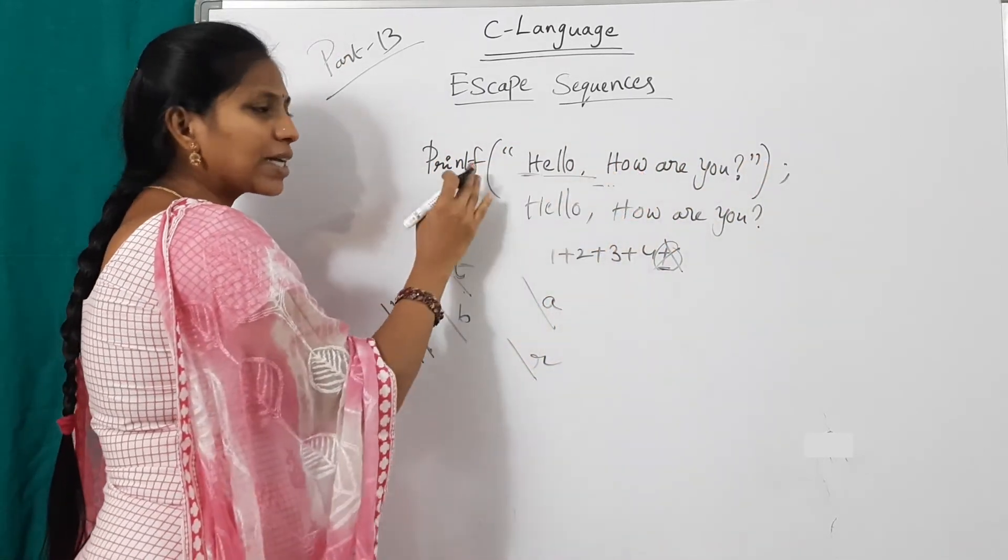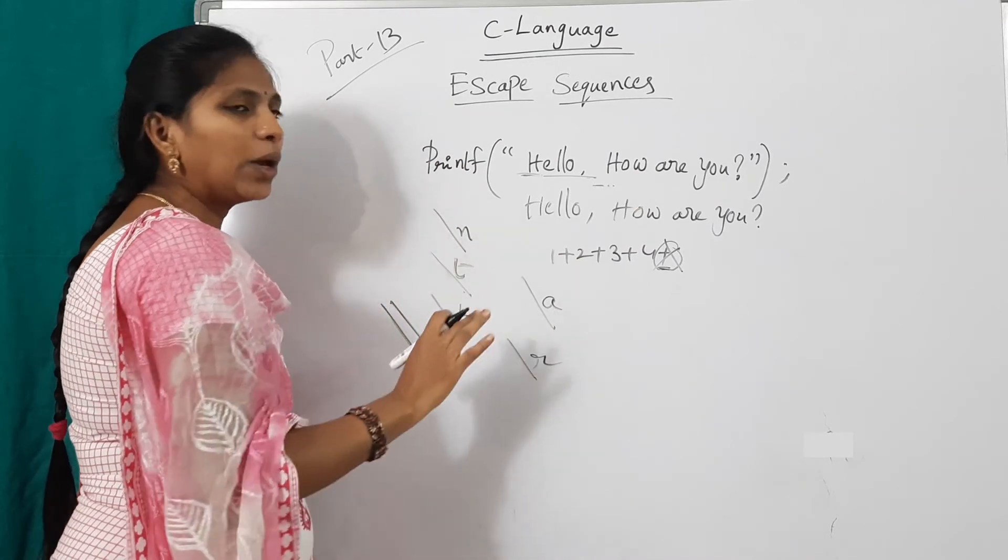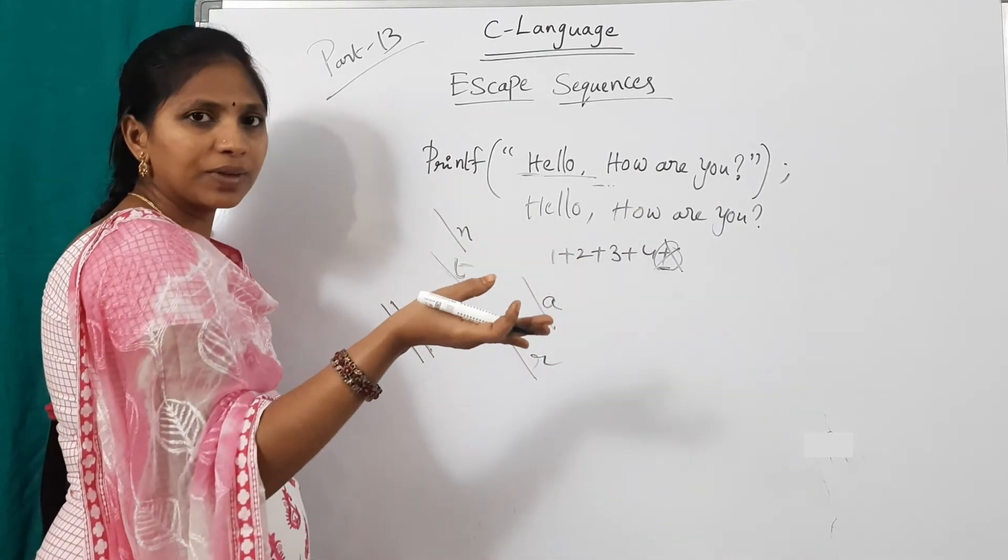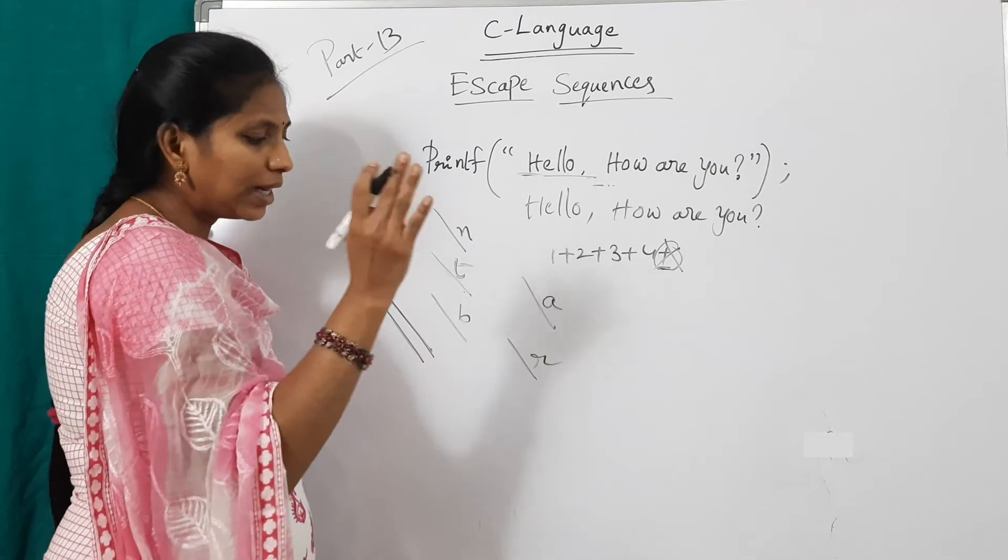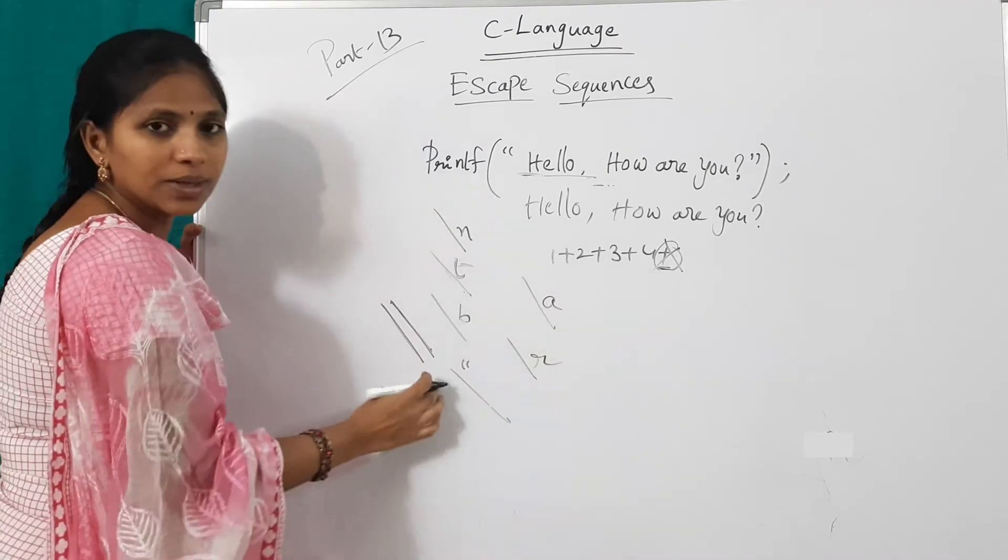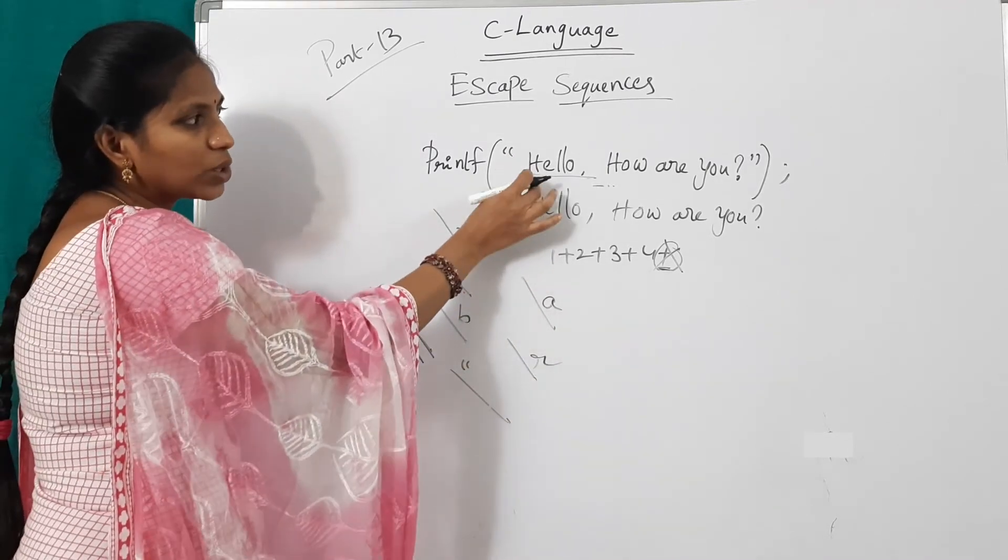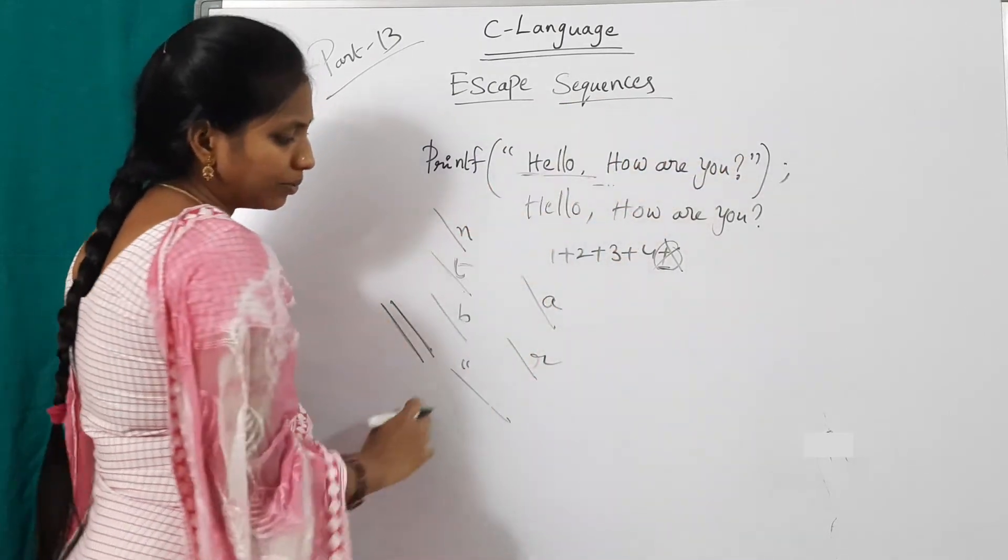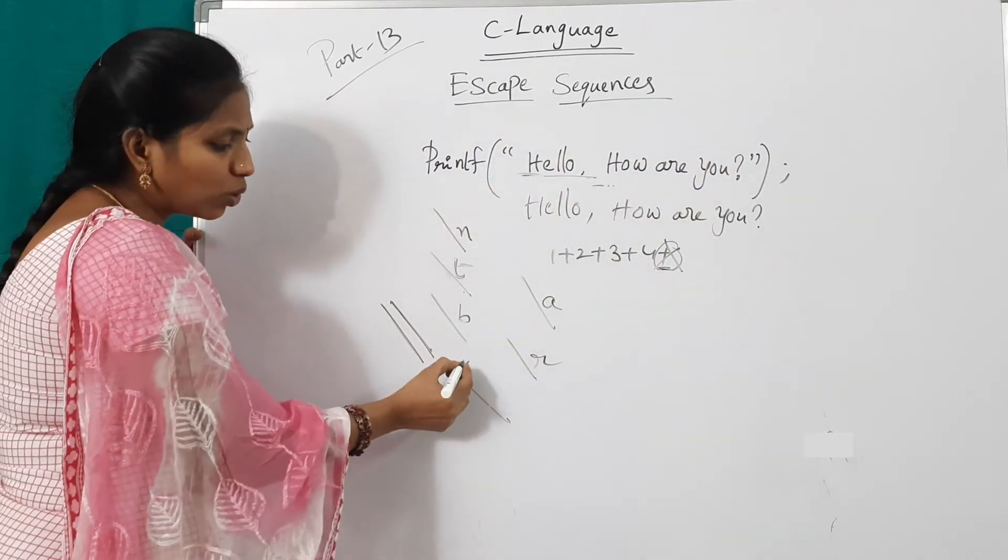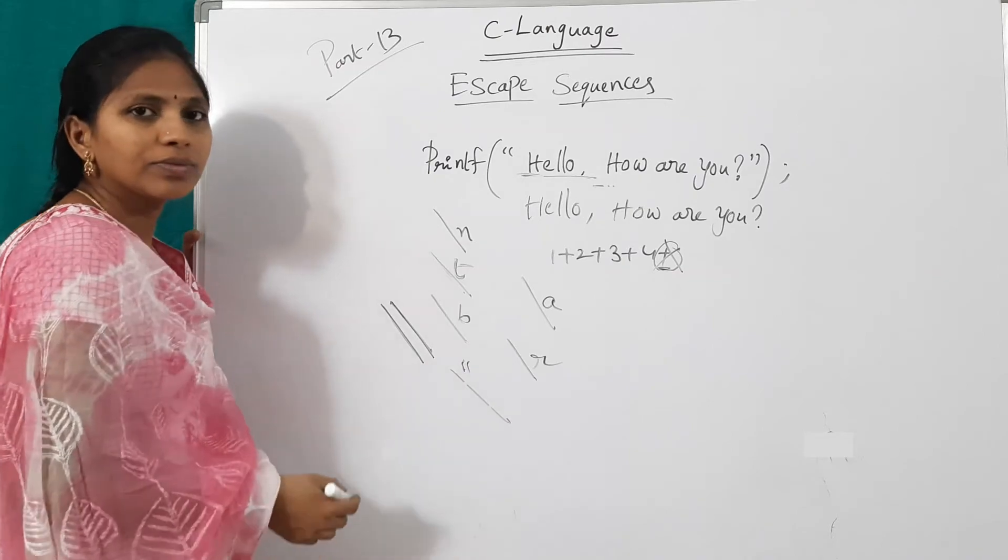But I want to print the quotations at result screen. In that case, use slash and quotations. At starting of this one, at ending of that one. Then it will print these quotations.